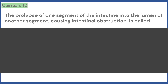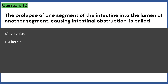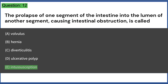The prolapse of one segment of the intestine into the lumen of another segment, causing intestinal obstruction, is called: A. Volvulus, B. Hernia, C. Diverticulitis, D. Ulcerative polyp, E. Intussusception. Answer: E.